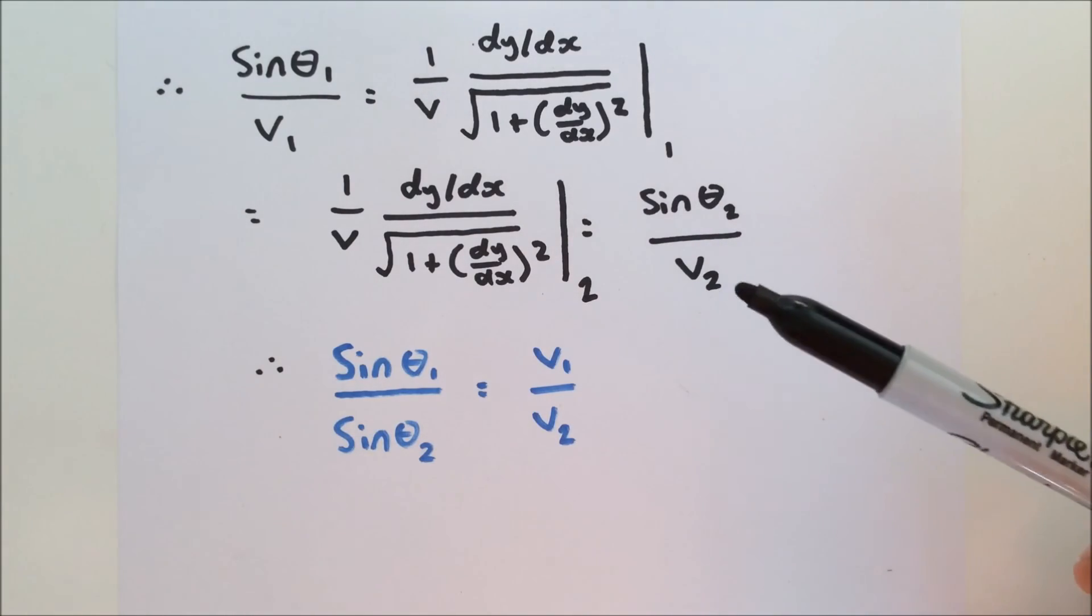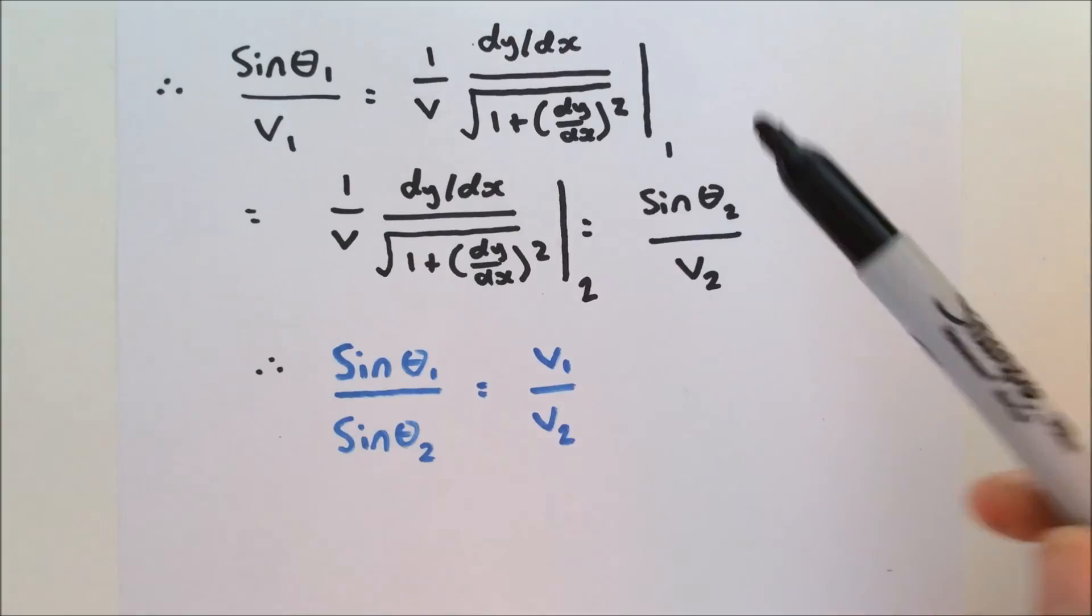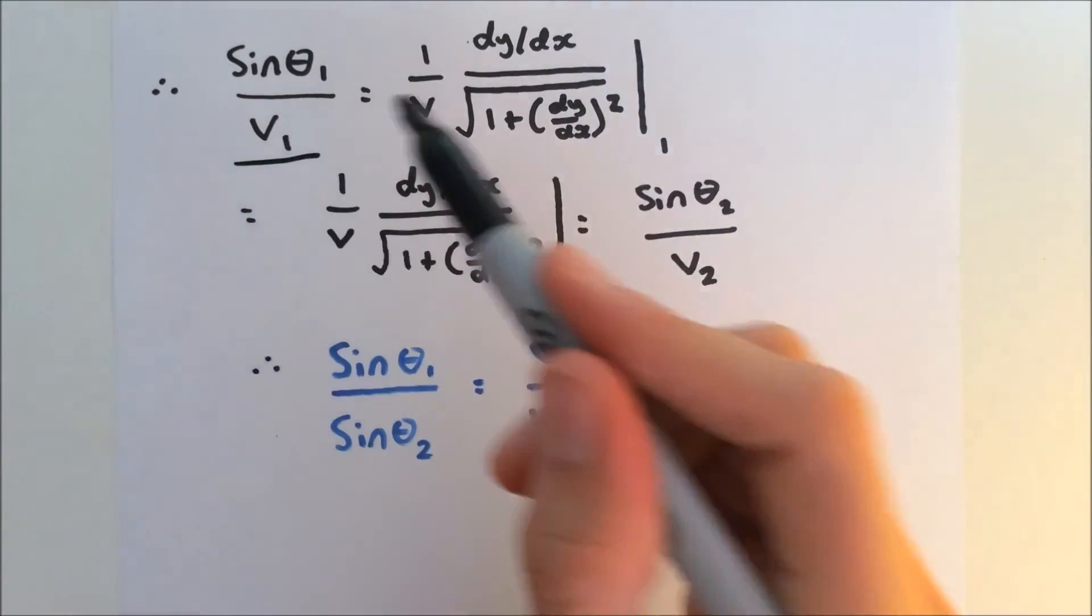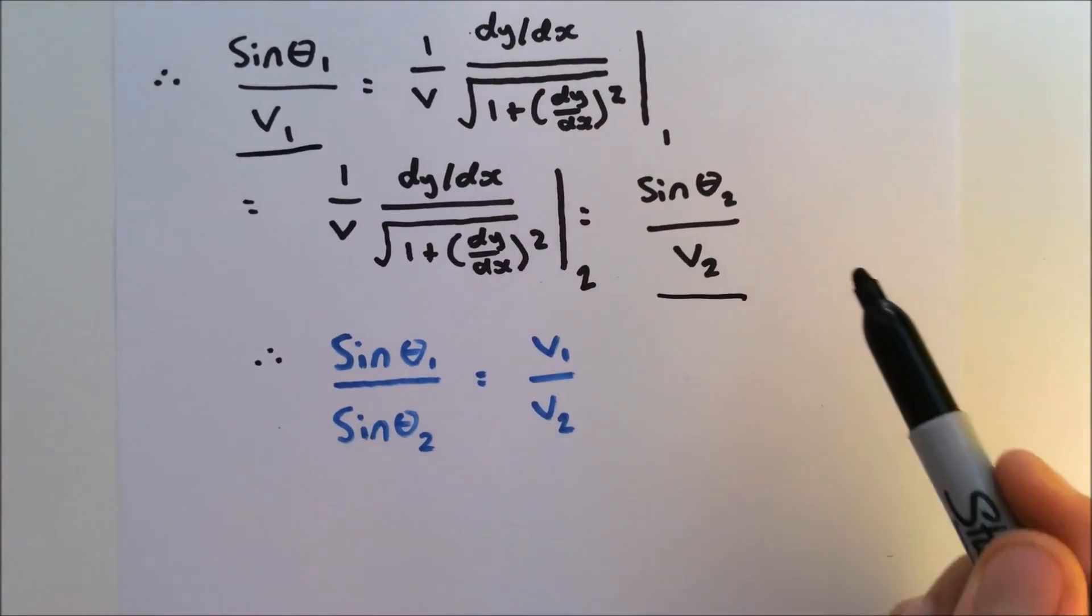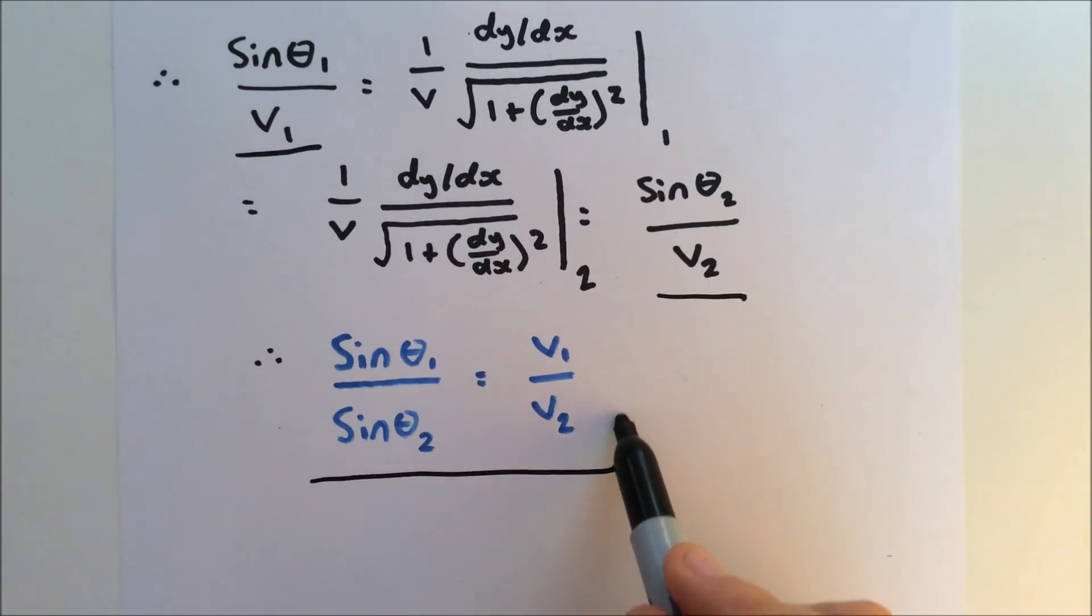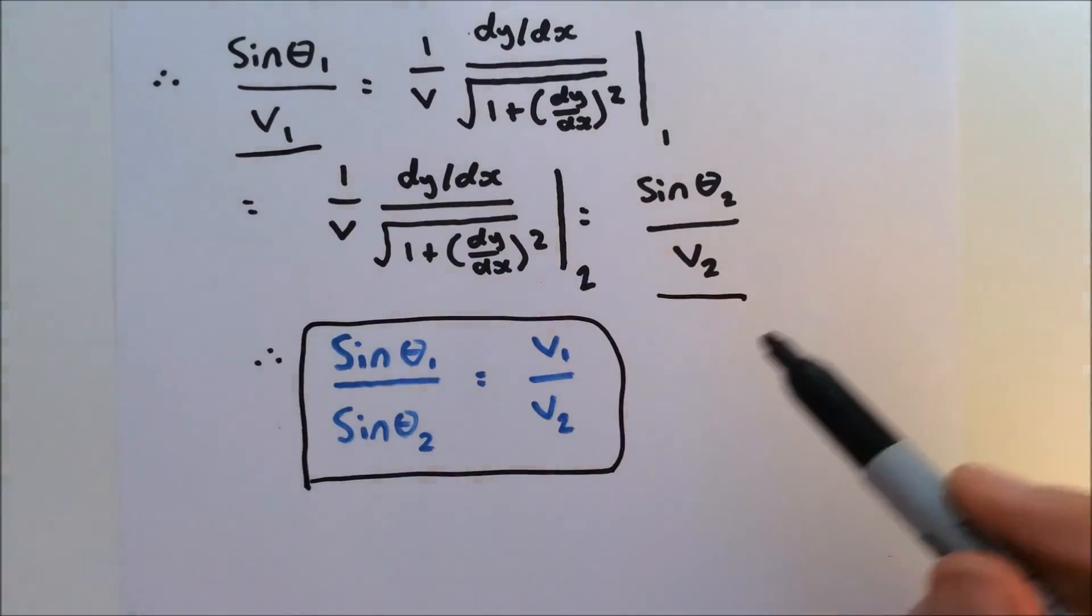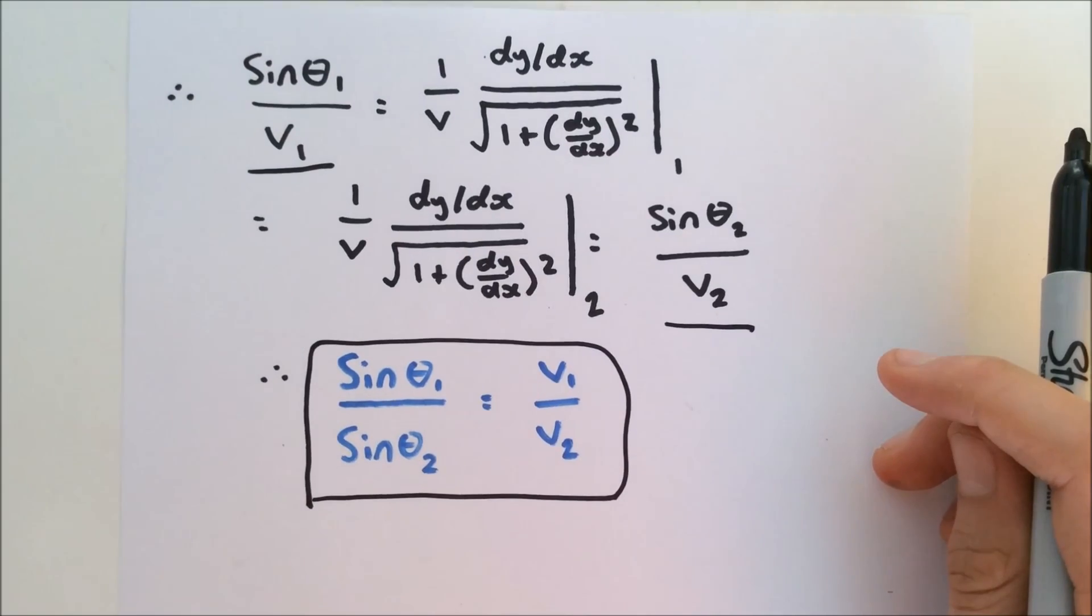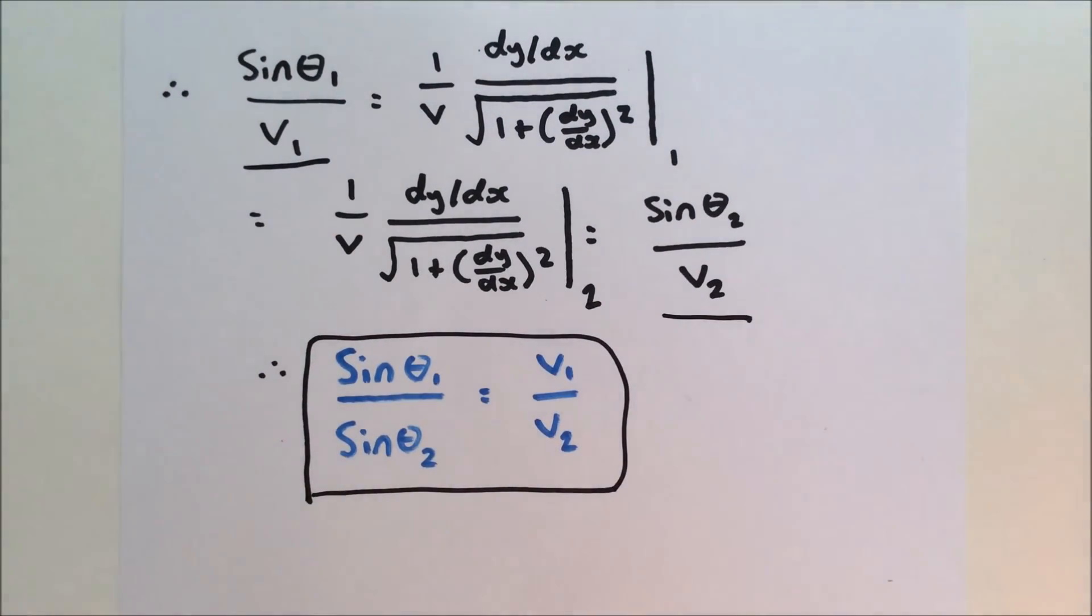So we have sine theta 1 divided by v1 is equal to sine theta 2 divided by v2. Therefore these are equal. We can rearrange to give us Snell's law. All right, so that's quite a neat proof and I hope that made sense. Yes, so thank you for watching.